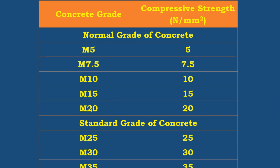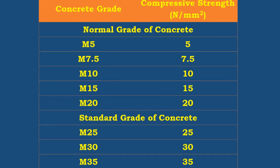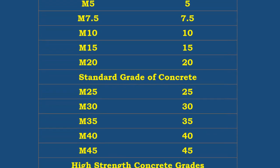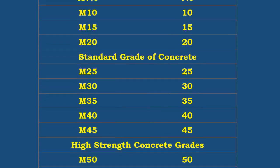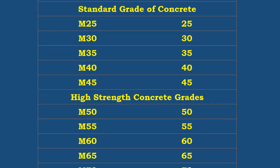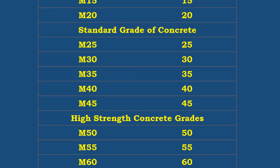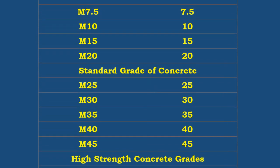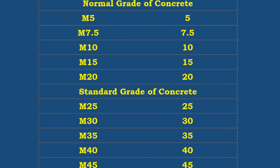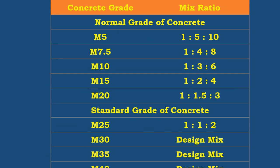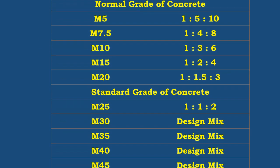There are three major groups of concrete: ordinary concrete, standard concrete, and high strength concrete. There are a total of 15 grades of concrete whose compressive strength is shown on the screen. Each grade of concrete represents some mix ratio.